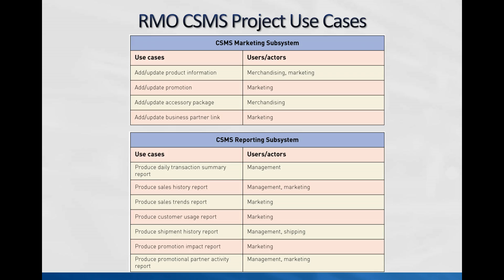The marketing subsystem covers products and promotions — that's the marketing or merchandising department. The reporting subsystem lets us make sure the system is working accurately and gives us a pulse on the company. A lot of companies over-report internally, worrying about every day versus longer-term goals. The marketing department can produce a sales trends report, and for something like a promotional partner activity report, both marketing and management may have access. We can have multiple actors for many use cases.